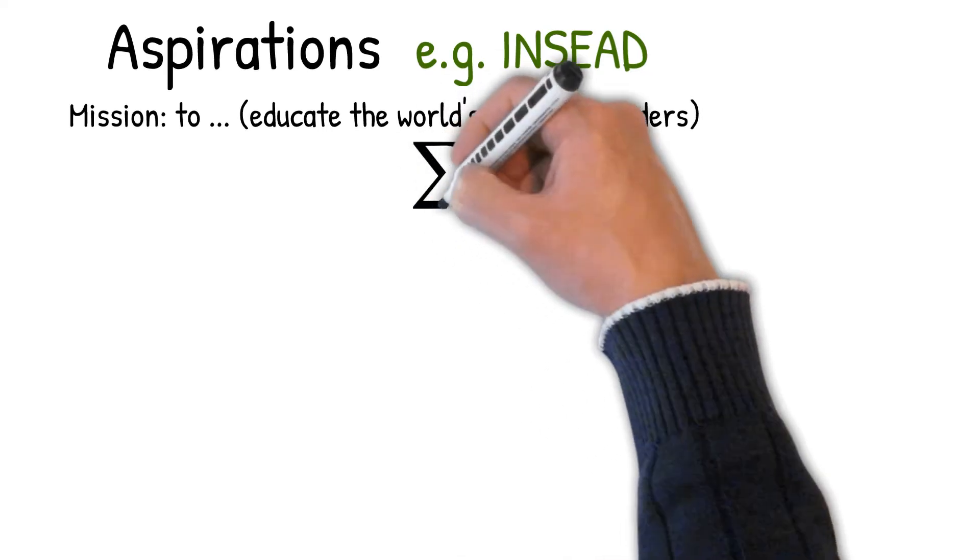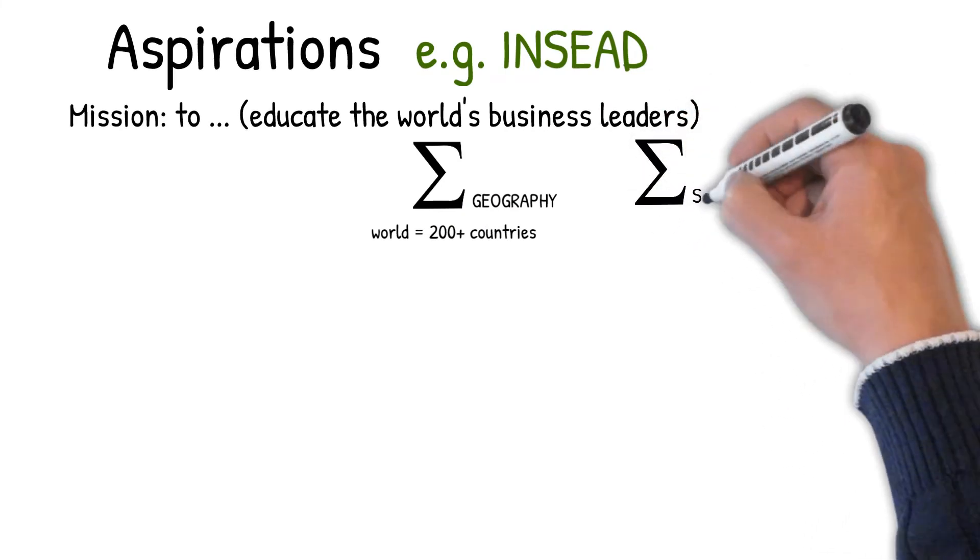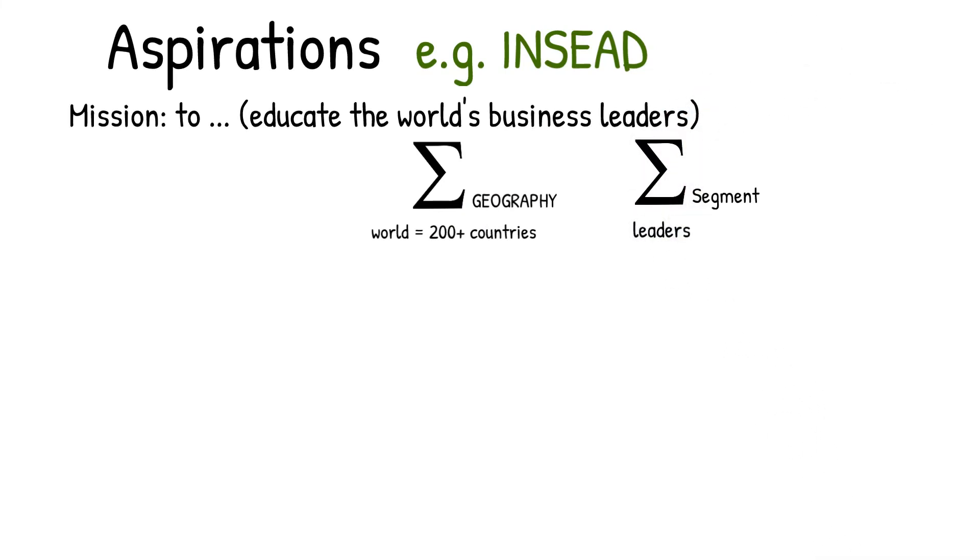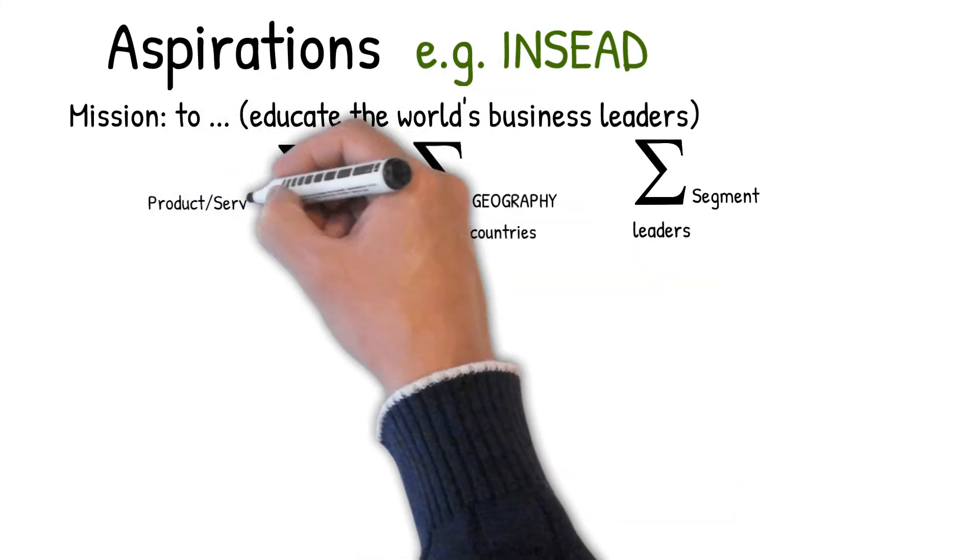The first sigma, what is our geography? That's the world. Second sigma, what is the segment we're targeting? That would be business leaders. And third, what's the product or service that we're actually offering? That would be education.